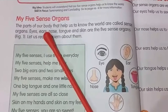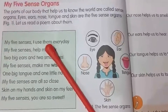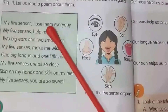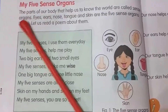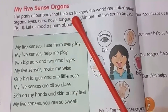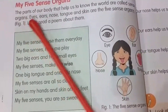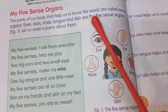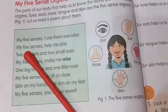The five sense organs are eyes, ears, nose, tongue, and skin. Today we will learn about body parts that help us to know the world. The parts of our body that help us to know the world are called sense organs. Eyes, ears, nose, tongue, and skin are the five sense organs.